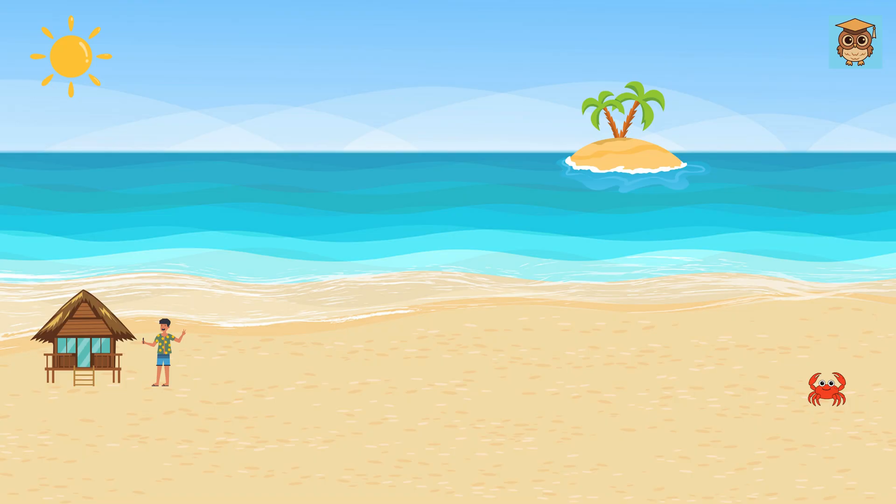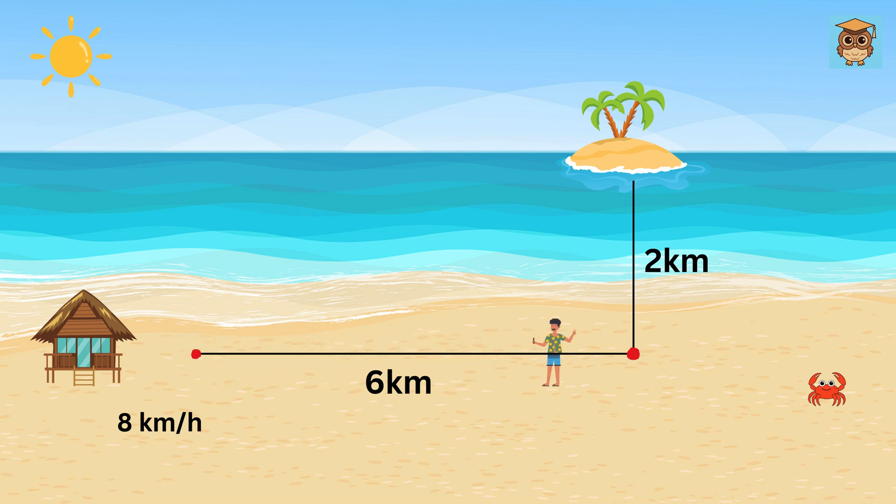One sunny morning, Alex woke up in his seaside cabin, and today he is excited to explore a small island just off the coast. The island was 2 kilometers directly north of the closest point on the beach, but Alex's cabin is 6 kilometers west of that spot. Alex could run along the beach at 8 kilometers an hour and swim through the water at 3 kilometers an hour.